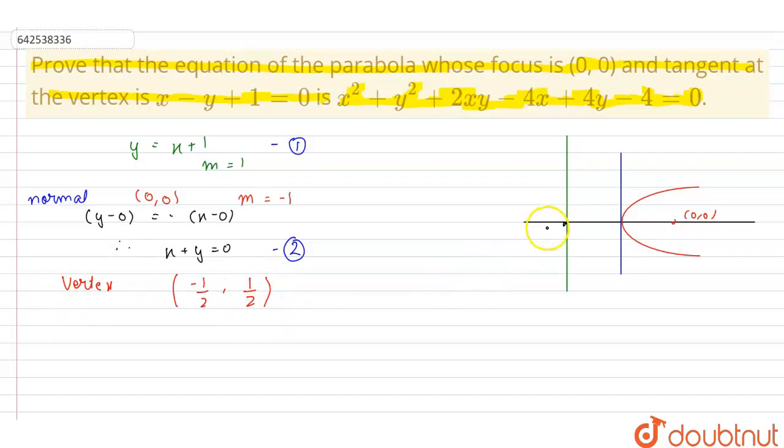Now, let us assume this point to be Z and the coordinates of Z to be (p, q). We know that the vertex is the midpoint of the point Z and the focus. So, using midpoint formula,